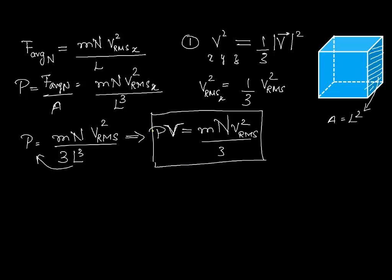This equation is extremely important because it is one of the very few equations in physics where macroscopic quantities — like pressure and volume — are connected to microscopic quantities like the mass and velocity of gas molecules. So we have a connection between microscopic properties and macroscopic ones like pressure and volume. That is the significance of this equation.